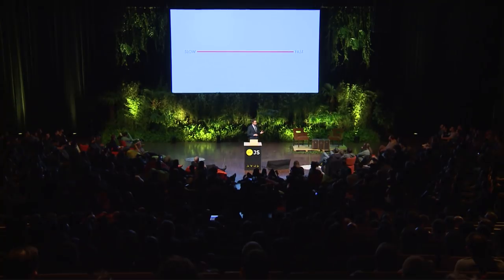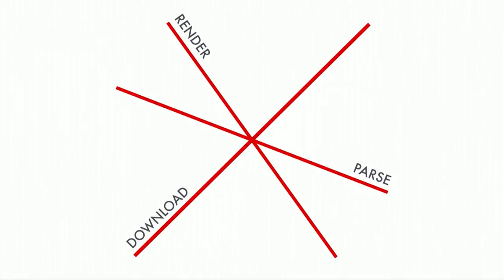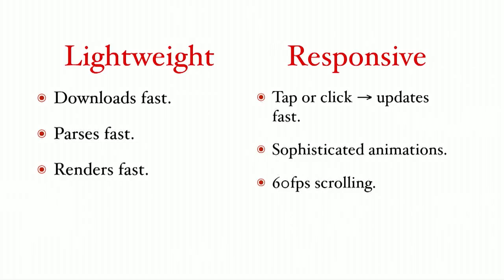When we talk about web performance, we often talk about an app being fast or slow. But there's no single fast or slow axis. Instead, there are a number of axes along which an app can be fast or slow. If we break these into two broad categories: first, an app being lightweight — when someone taps a link, they see something instantly. Second, we want a responsive app that responds instantly anytime you tap, swipe, or click, even if the page isn't fully loaded yet.